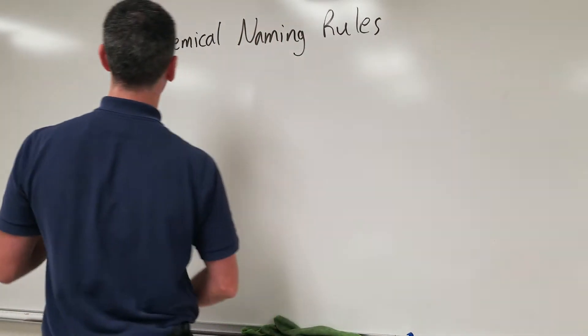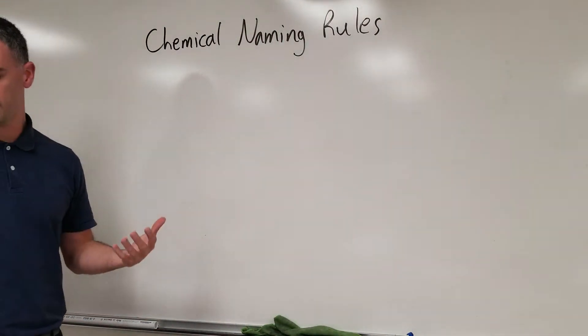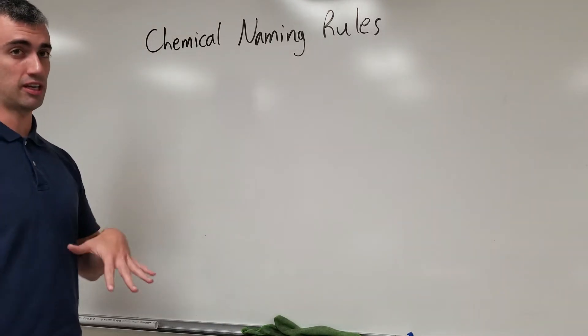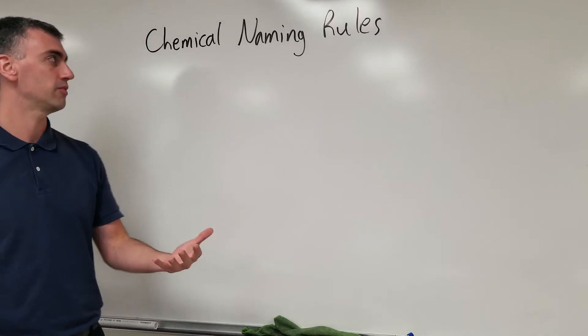Alright, let's talk about the rules of chemical naming. Chemical naming is the idea that you should be able to look at a formula and come up with a name for it, or look at any given chemical name and be able to come up with a formula for it.